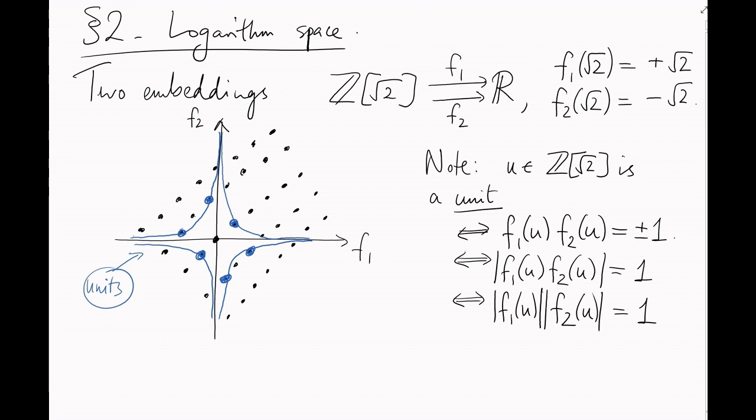Now here's the trick. We're going to take the logarithm of both sides of this equation. Log of mod f1 of u plus log of mod f2 of u equals the log of 1, which is 0.